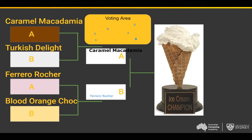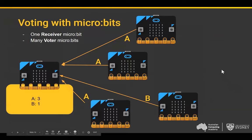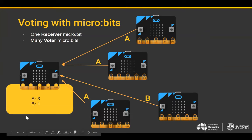Why did we change things up? In the second round we were simulating how we're going to vote with micro:bits: one voting location acting as the receiver micro:bit, and everyone being little voter micro:bits sending out A's or B's to the receiver so they could be tallied. That's what we're going to whip up in MakeCode next.